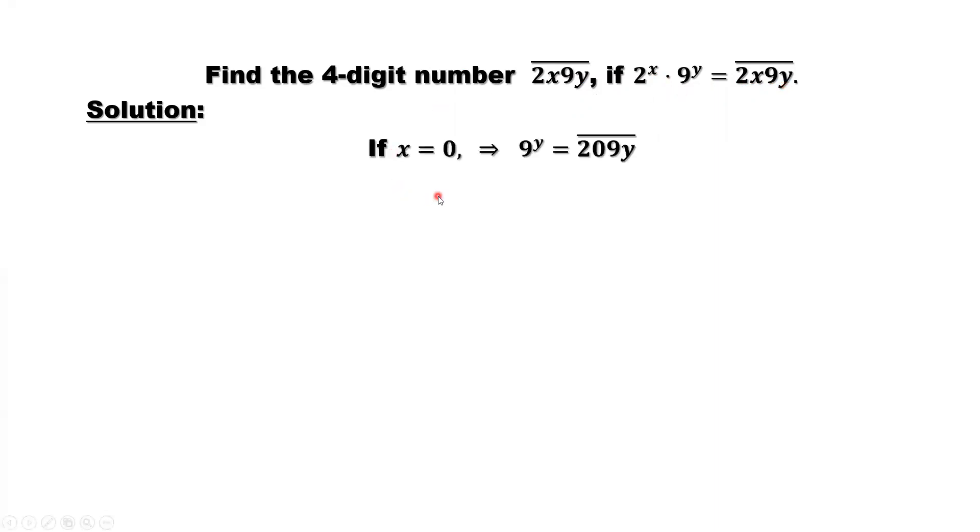If x equals 0, 2 to the power x equals 1. This implies 9 to the power y equals this four-digit number 2, 0, 9, y. We replace the x by 0.